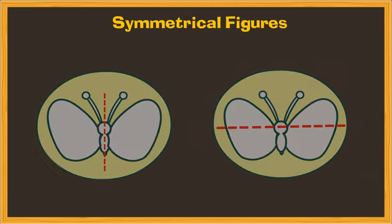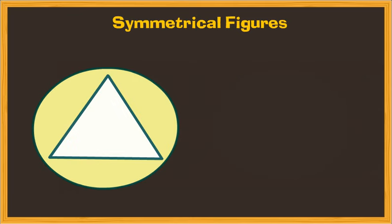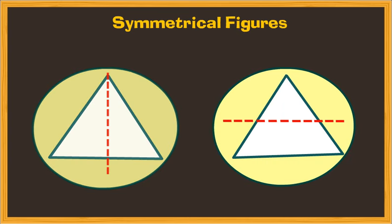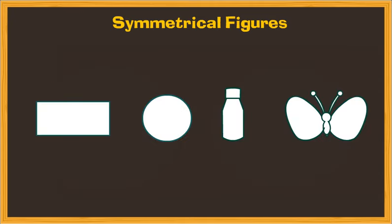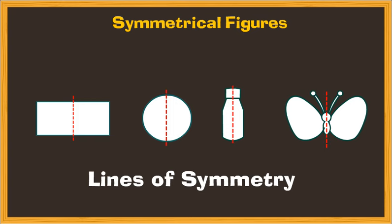Similarly, this triangle is symmetrical along this line, but not along this one. A line which divides a figure into two equal halves is called the line of symmetry.